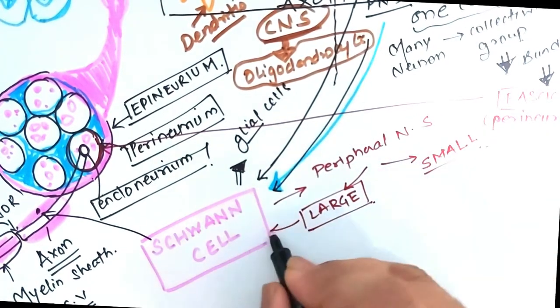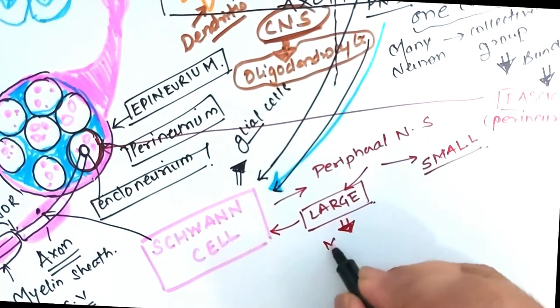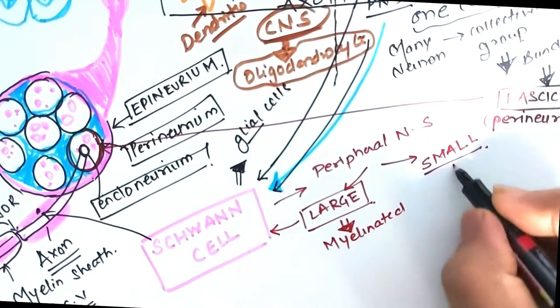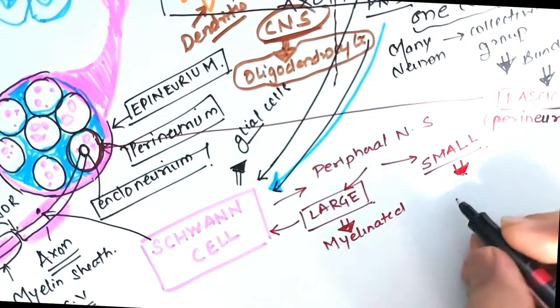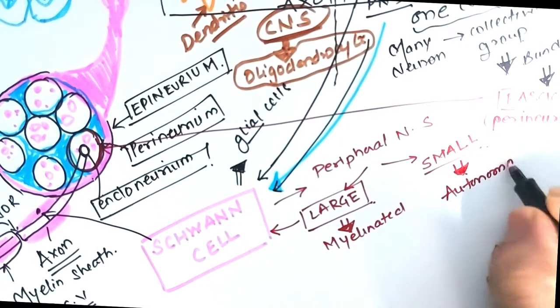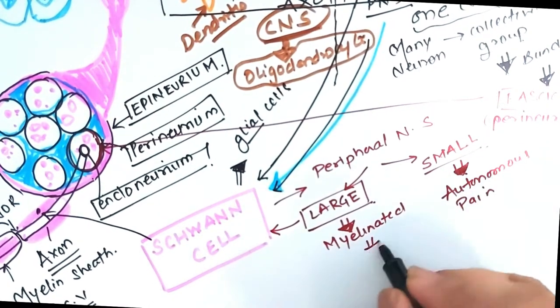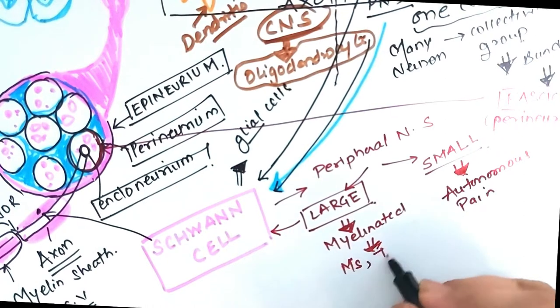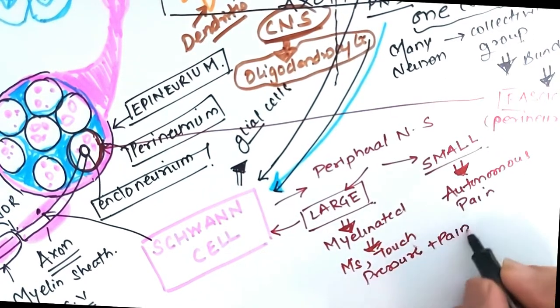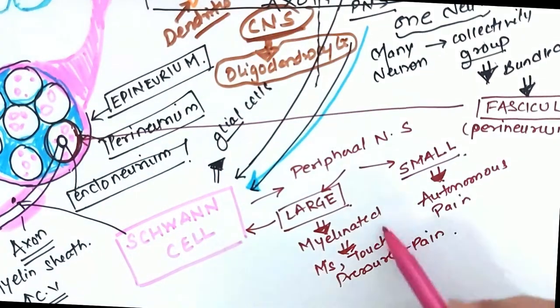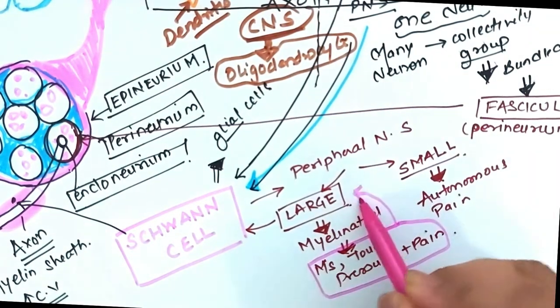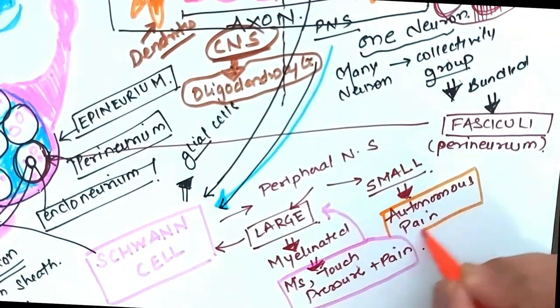These peripheral nerves are classified into two categories: the large myelinated nerve fibers and the small unmyelinated nerve fibers. The small unmyelinated nerve fibers are responsible for autonomic function plus pain, whereas large myelinated nerve fibers are responsible for muscle, touch, pressure, as well as pain sensation.